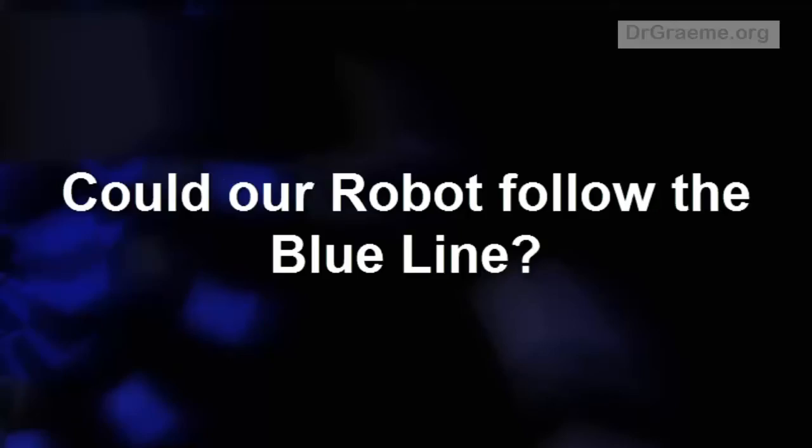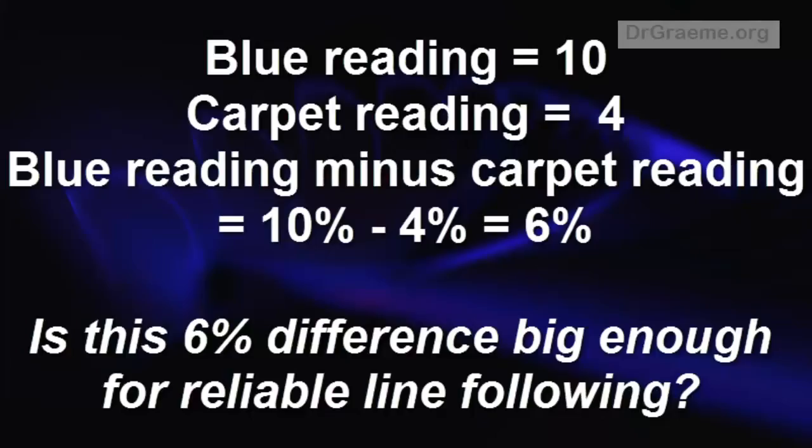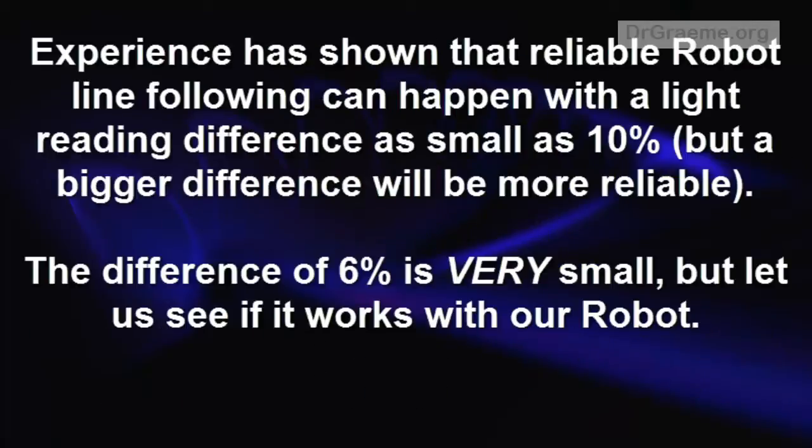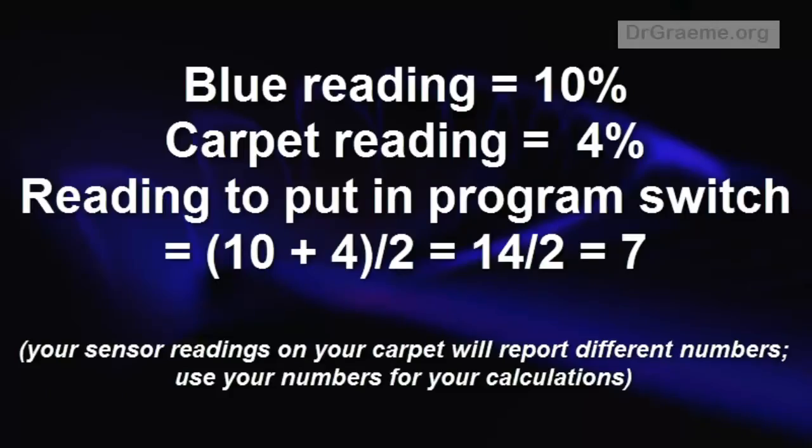Could we make our robot follow the blue line as well? Now the difference between the blue and the carpet reading is only 6%. That's a very small value. And past experience has shown that we need about 10% difference for reliable line following. Maybe 6% will work.